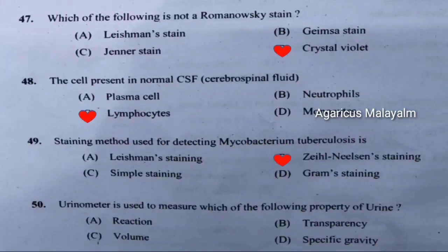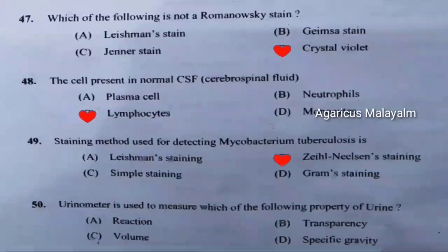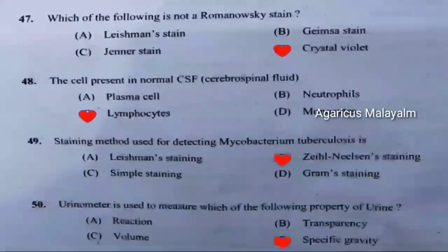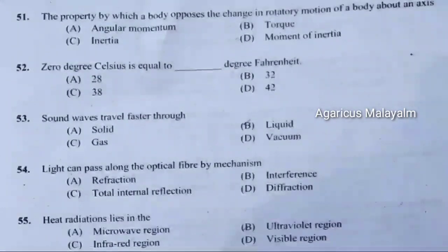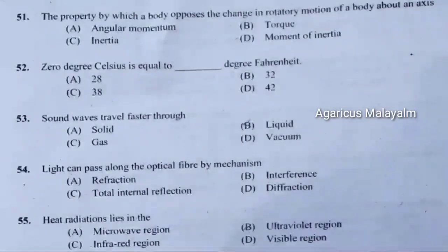Fiftieth question: Urinometer is used to measure which of the following property of urine. Correct answer is option D — specific gravity. Fifty-first question: The property by which a body opposes the change in rotatory motion of the body about an axis. Correct answer is option D — moment of inertia.